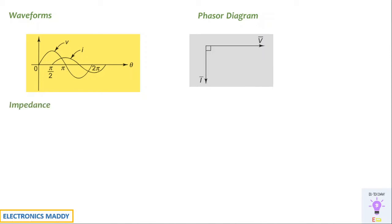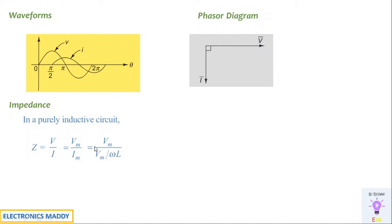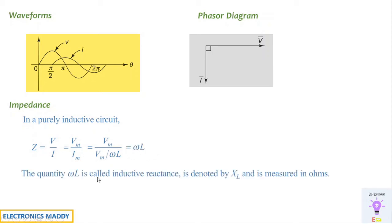Now let's look at the impedance offered by a pure inductor in an AC network. By definition, impedance is the opposition offered by the network: Z = V/I, the ratio of voltage to current. Writing V as Vm and I as Im, and substituting Im = Vm / ωL, the Vm terms cancel and the impedance equals ωL. This quantity ωL is called inductive reactance, denoted XL. So XL = ωL is the fundamental impedance of an inductor in an AC circuit.